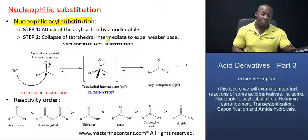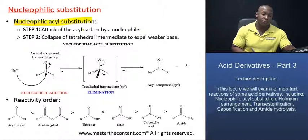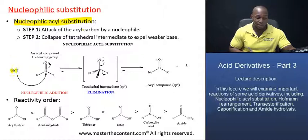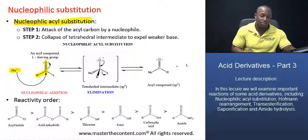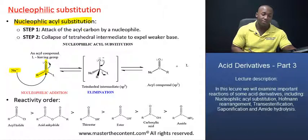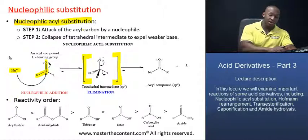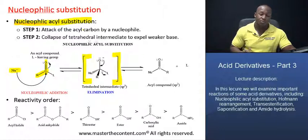The first thing that happens is that you will have an attack of the acyl carbon by a nucleophile. Direct your attention to the bottom of the screen right here. We have a nucleophile that I'm highlighting attacking the carbon of the acyl group. It adds to that carbonyl compound resulting in the formation of a tetrahedral intermediate. I'm highlighting it in parentheses right now. What happens to complete this reaction is a basic elimination step. This tetrahedral intermediate will then collapse with the expulsion of the weaker base.